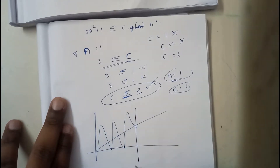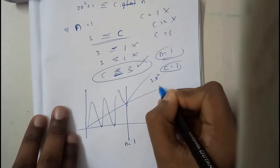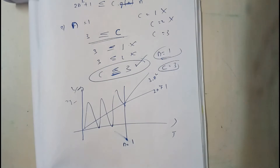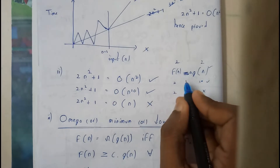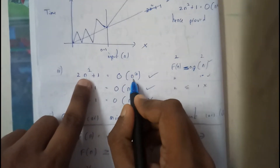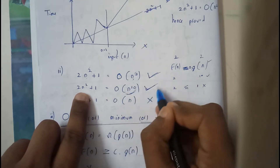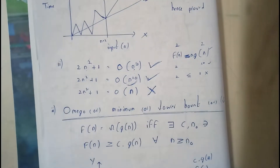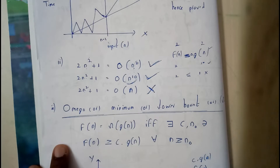Now draw the graph: n₀ = 1, and the upper bound is c·g(n) = 3n², while our function is 2n² + 1. The x-axis is input and the y-axis is time variance. For Big O to be true, g(n) being equal to or greater than f(n) satisfies the condition since it is the maximum boundary. If g(n) is less, it is not a valid situation.